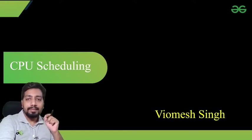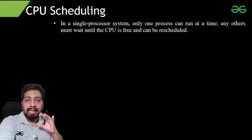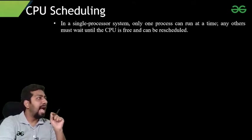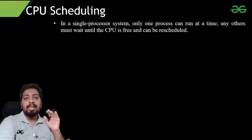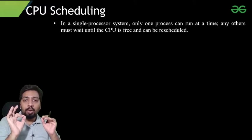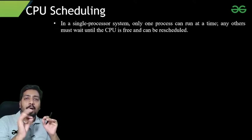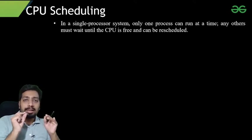Let me tell you what CPU scheduling is and why we need it. In a single processor system, only one process can run at a time; any other process must wait until the CPU is free. We mostly talk about uniprocessor systems because in GATE, NET, and university exams, questions are mostly based on uniprocessor systems.